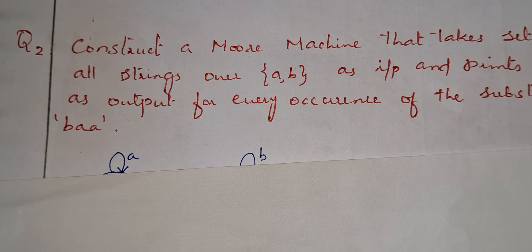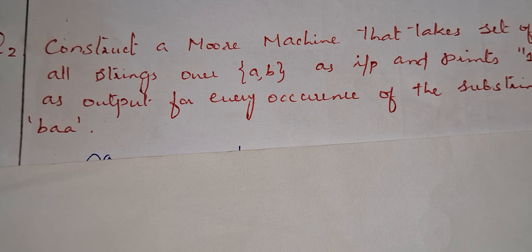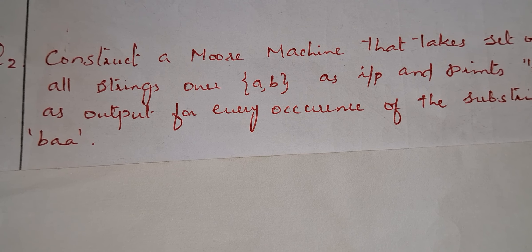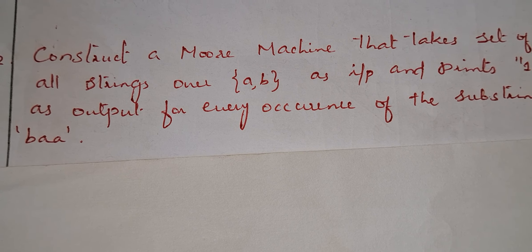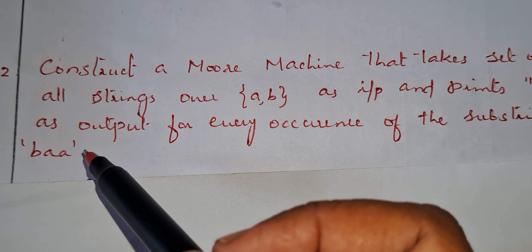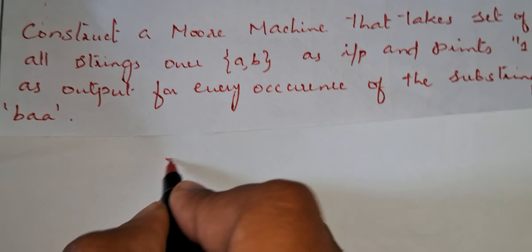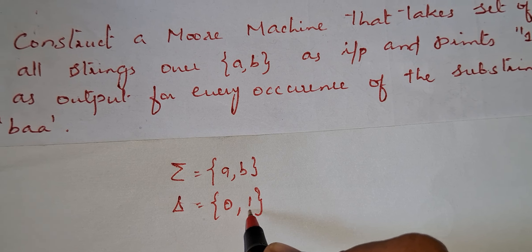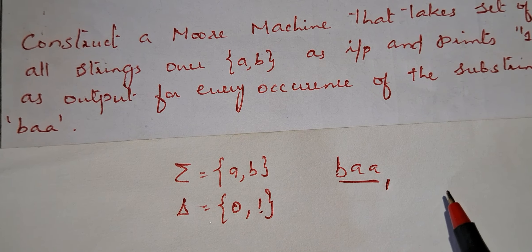The next problem is: construct a Moore machine that takes the set of all strings over the input alphabet {a, b} as input and prints one as output for every occurrence of the substring 'baa'. So whenever we are seeing 'baa' it will produce output 1. Our input symbols are a and b, and our output symbols are 0 and 1.